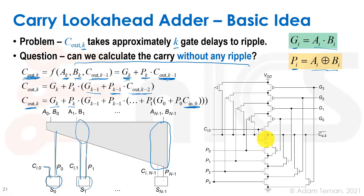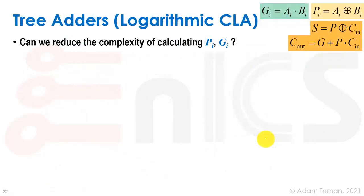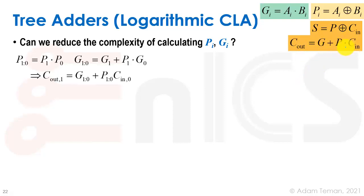The usual implementation is a logarithmic carry lookahead adder — a tree adder. We want to reduce the complexity of calculating propagates and generates. We define a block propagate: p(1:0) = p1·p0, and a block generate: g(1:0) = g1 + p1·g0. This means: if stage 0 generated a carry and stage 1 propagated it, or if stage 1 generated its own carry, the block output carry is 1.